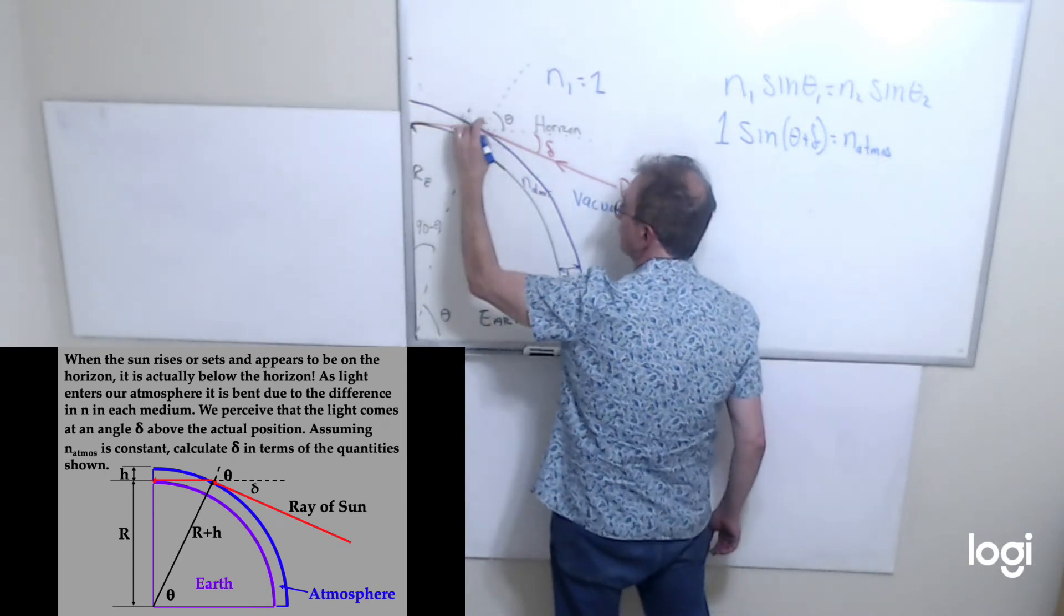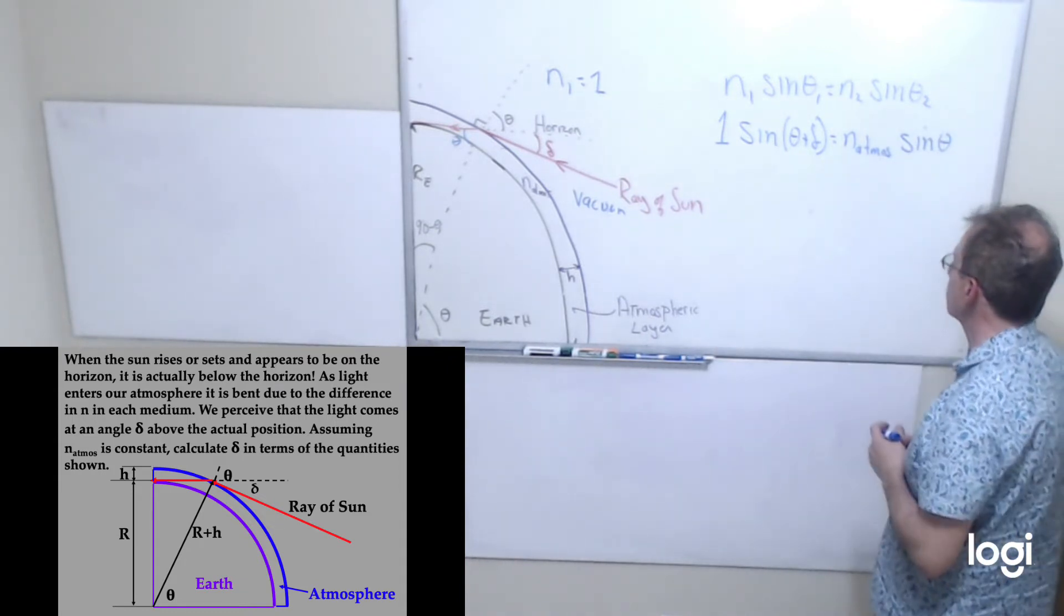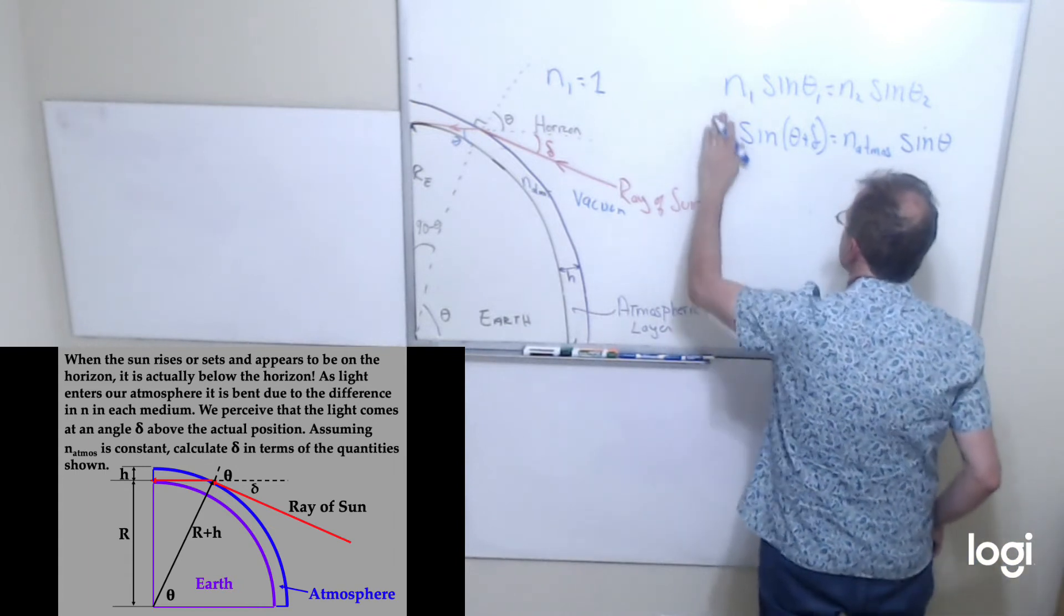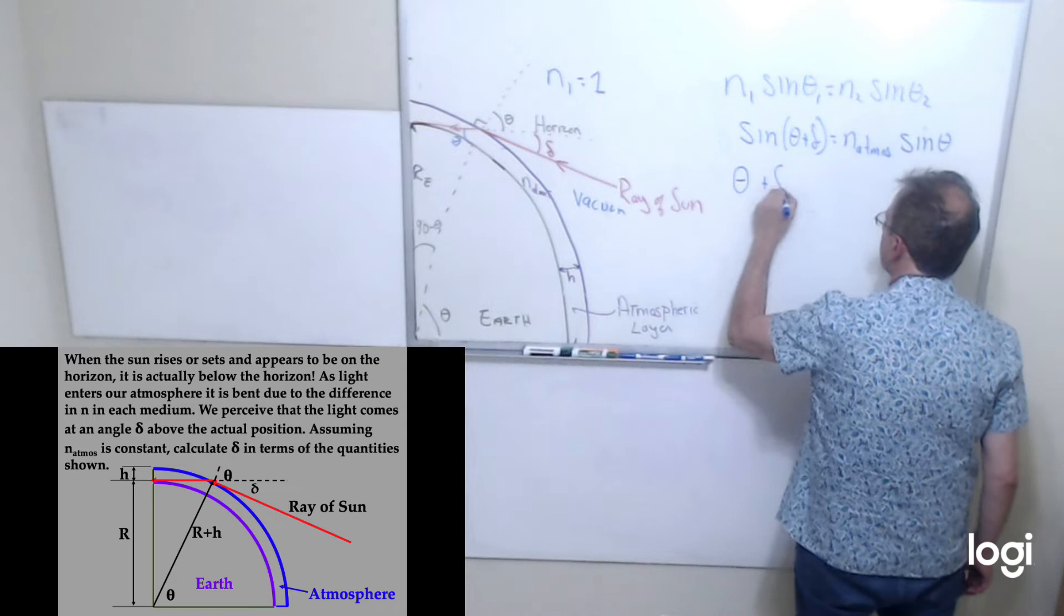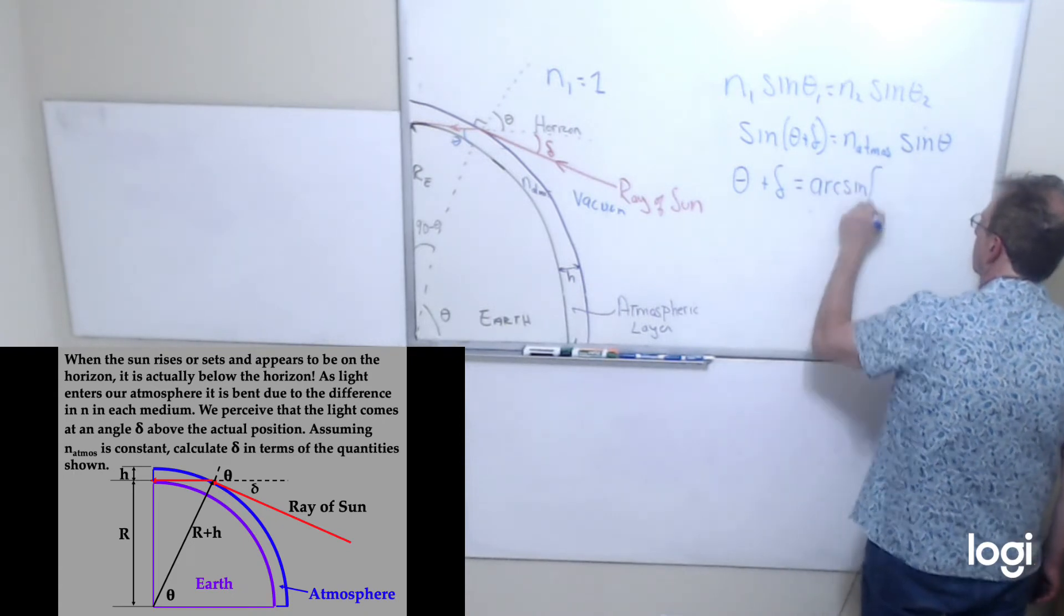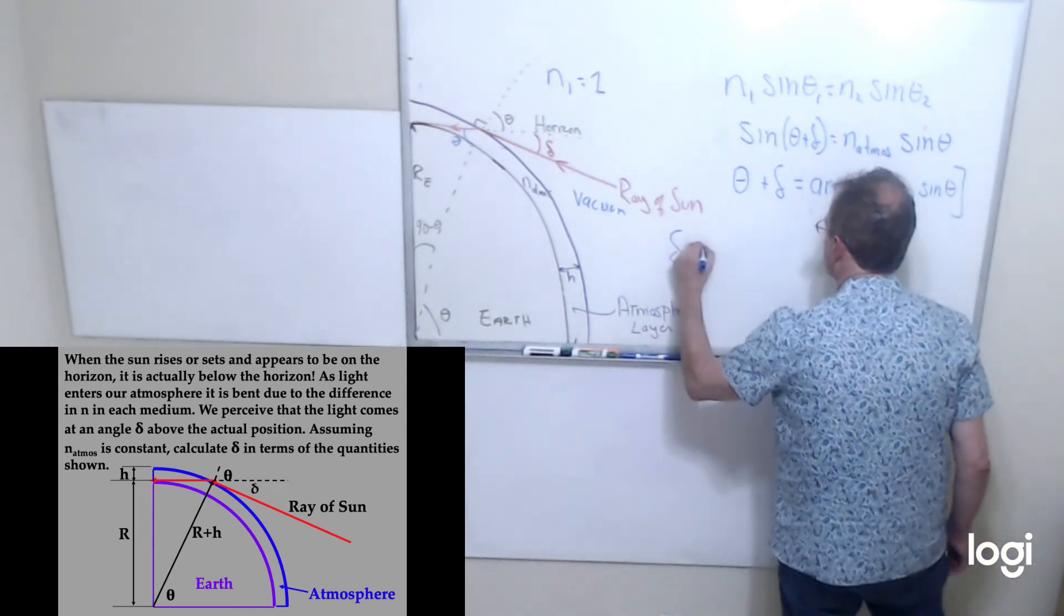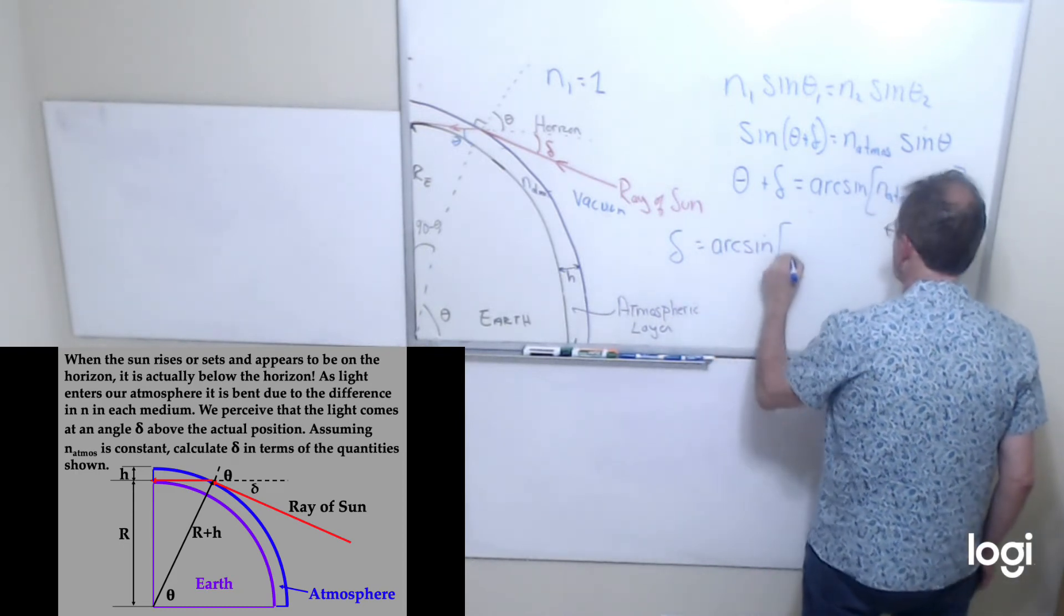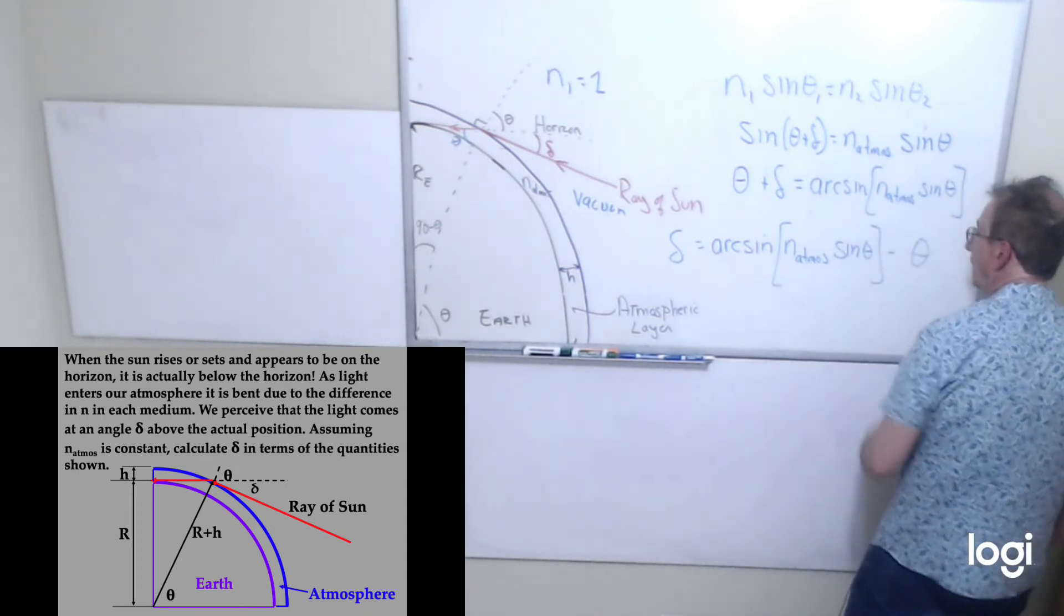This angle is theta. This angle. These are vertical angles. That angle is theta. So I have to take the inverse sine of both sides. And if I take the inverse sine of both sides, I'm going to get theta plus delta equals the inverse sine of n_atmosphere sin(theta). And delta is going to be equal to the arcsin of n_atmosphere sin(theta) minus theta.